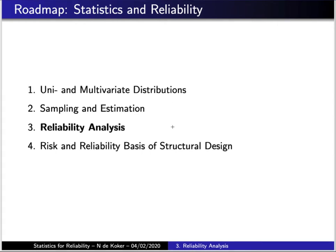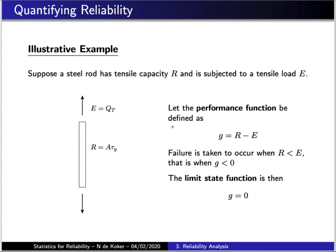Now we're going to look at how we can determine very low failure probabilities in the context of structural engineering. Let's start off with a very simple example where we have a steel rod with a yield stress tau_y subjected to some imposed tensile load Q_t. Specifically, we're going to quantify the reserved resistance capacity that the rod has by considering the difference between the maximum load it can hold and the load it's required to hold. We'll express that difference as G and refer to it as the performance function.